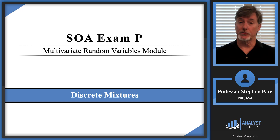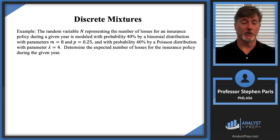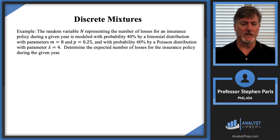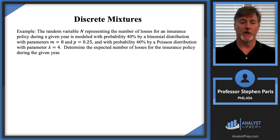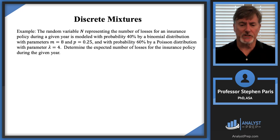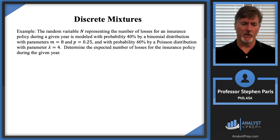In this video we're going to look at discrete mixtures. Let's get right into it with an example. The random variable N, representing the number of losses for an insurance policy during a given year, is modeled with probability 40% by a binomial distribution with parameters m=8 and p=0.25, and with probability 60% by a Poisson distribution with parameter lambda=4. We want to determine the expected number of losses for the policy for a given year.